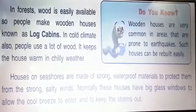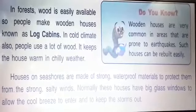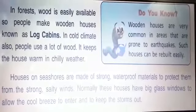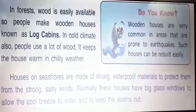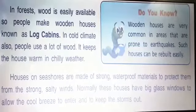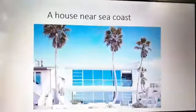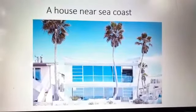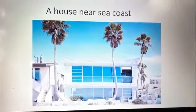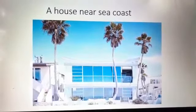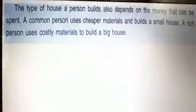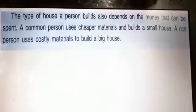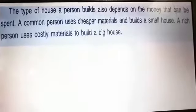Normally these houses have big glass windows to allow the cool breeze to enter and to keep storms out. You can see the picture — a house near the sea coast. The type of house a person builds also depends on other factors.